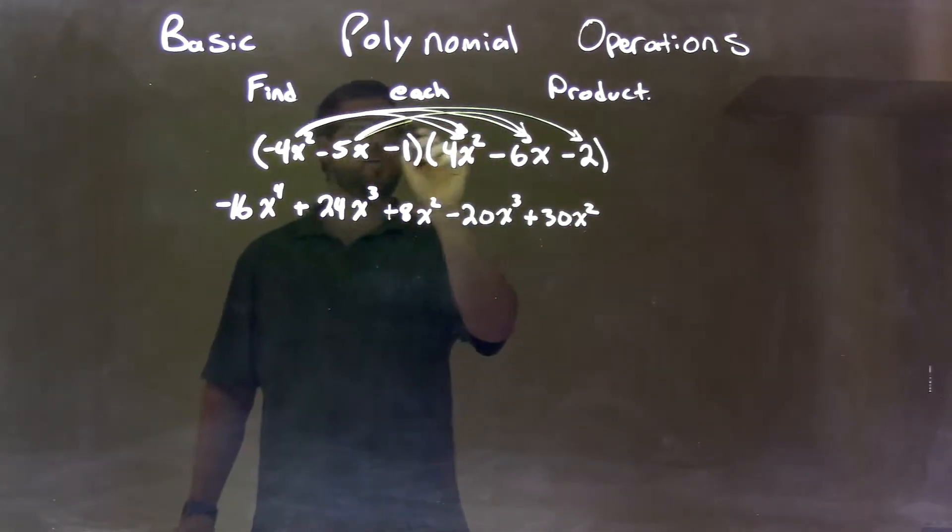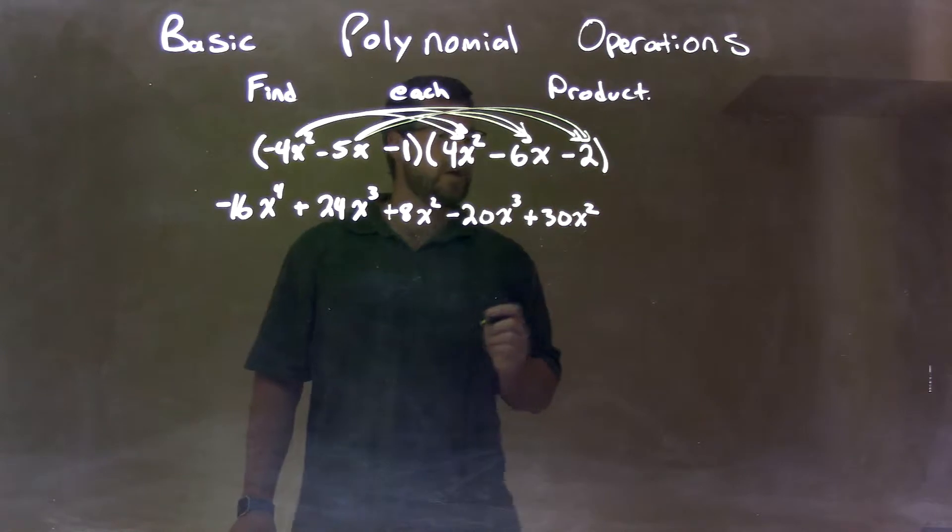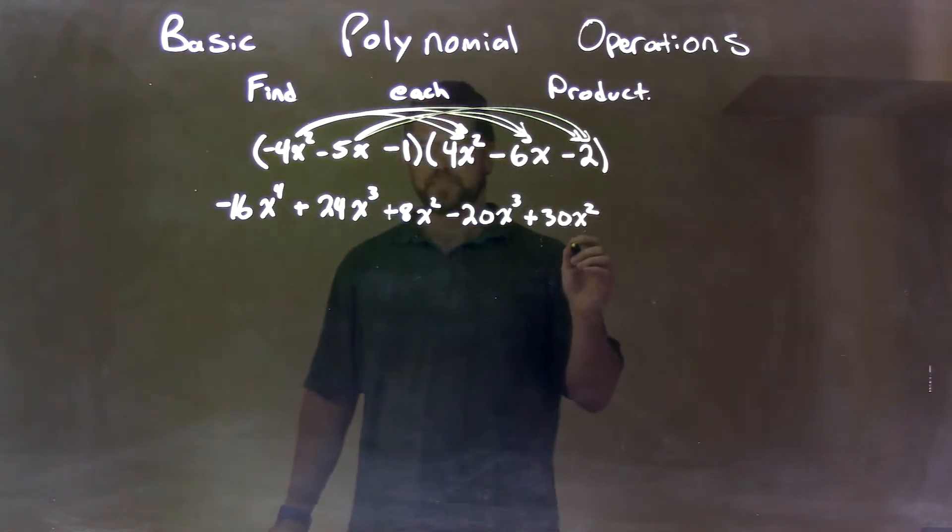Then, lastly, we have negative 5x times negative 2, which comes out to be positive 10x.